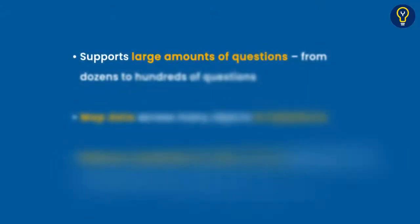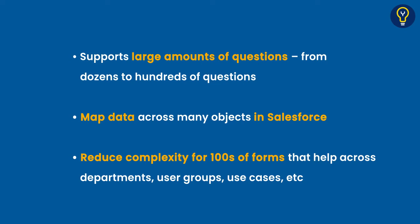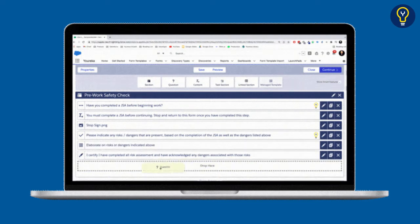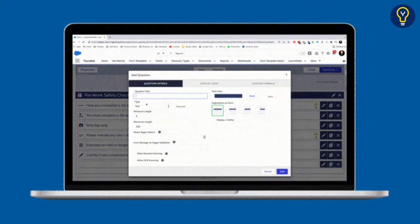But what we always like to say is: what happens when these forms start to have large amounts of questions — dozens or perhaps hundreds of questions? What happens when you need those forms to start mapping data across many objects in your data structure? What happens when the organization begins to need dozens or perhaps hundreds of different types of forms for different user groups, departments, or use cases? And maybe those forms need to all change over time, because business requirements change. Today you might want those forms looking one way, but next quarter, next week, or next month, you might need those forms to have adjusted.